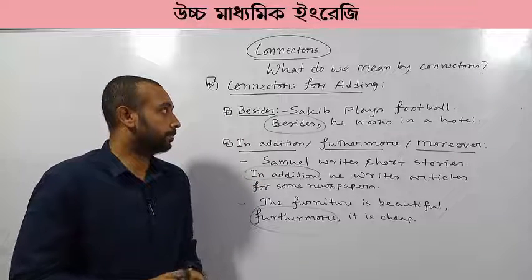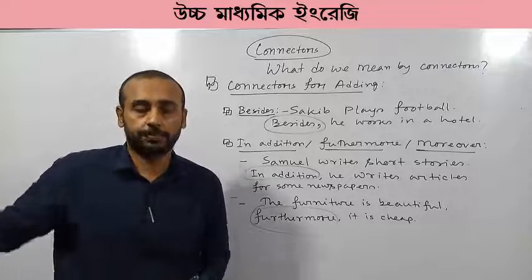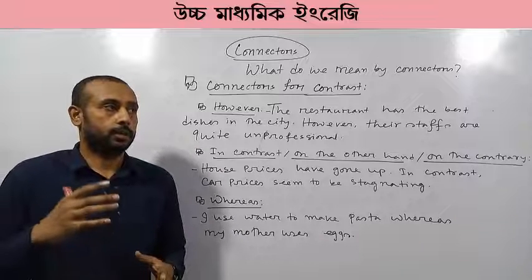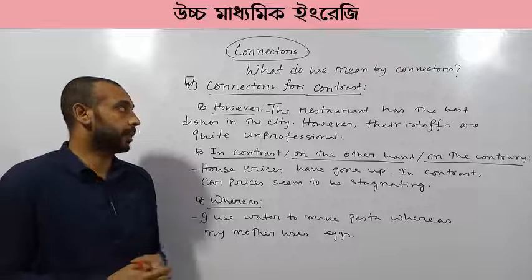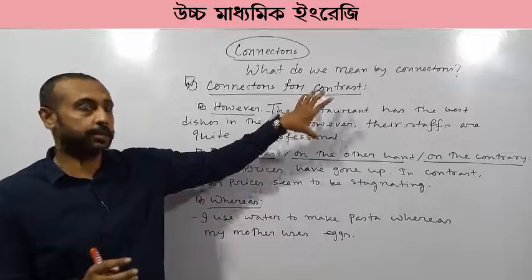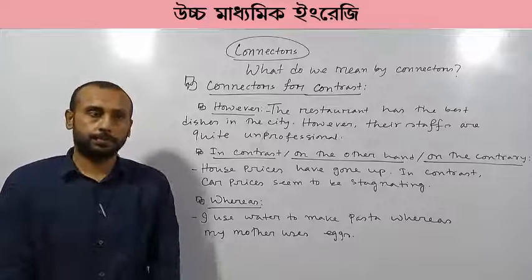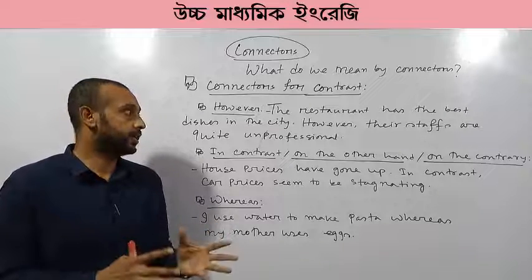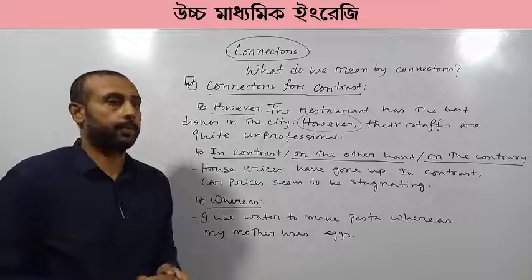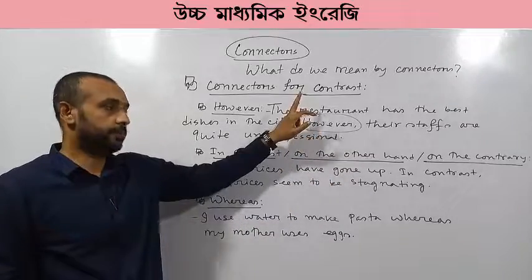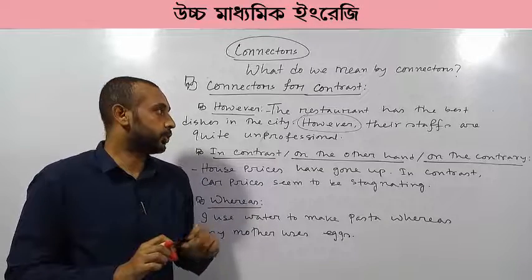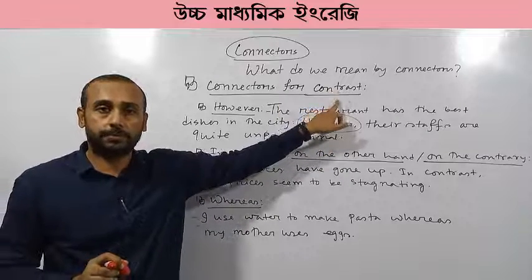Next we are going to discuss connectors for contrast and conflict. In a context of conflict and contrast, we use these connectors. For example, 'however.' Look at this example: 'The restaurant has the best dishes in the city. However, the staff are quite unprofessional.' There is a conflict between these two sentences — the first is a good quality about the restaurant, but the second is contradictory. That's why we used a connector for contrast or conflict.